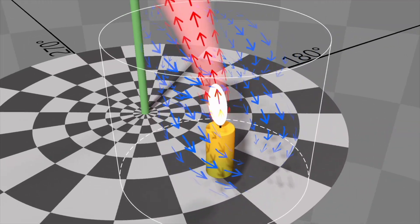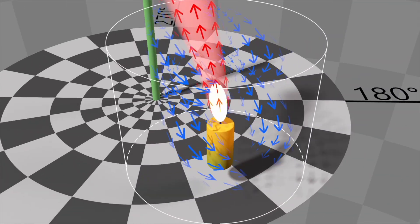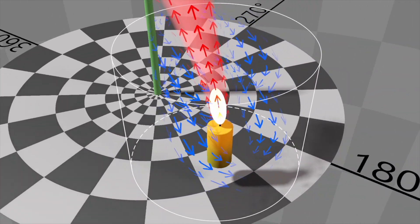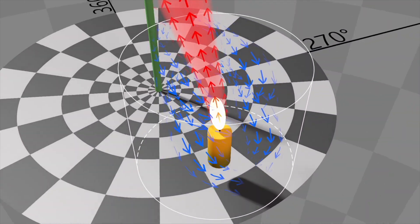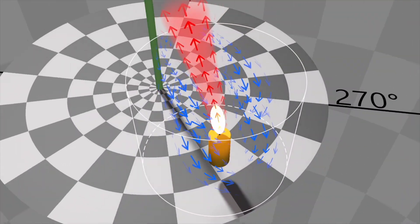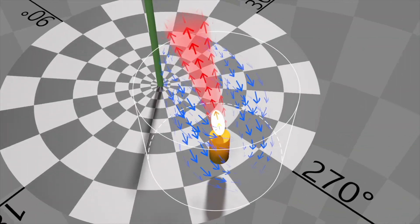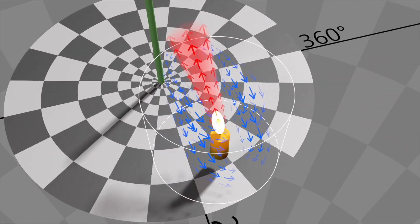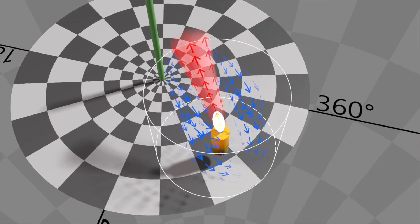The flame follows the warm air and is thus pushed inwards towards the axis of rotation, and thus towards Mrs. Santa.